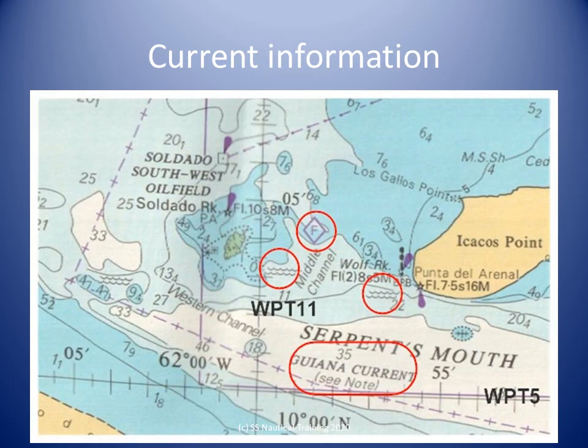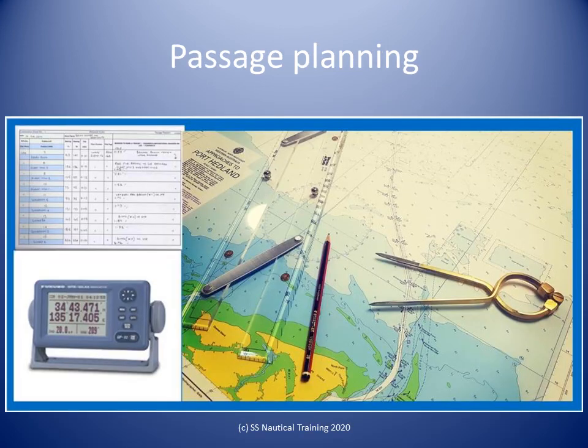Nautical charts provide us with information about current. Here are some current symbols and notes in the Serpent's Mouth. Nautical charts can also be used to plan a journey between two places, and the passage planned on the chart can then be input to the GPS.